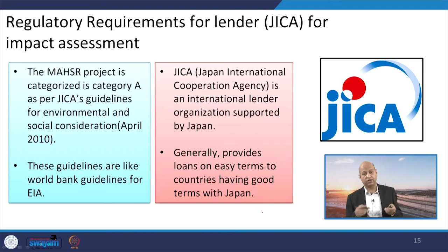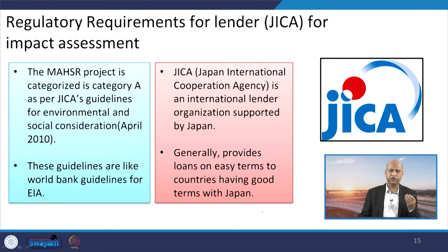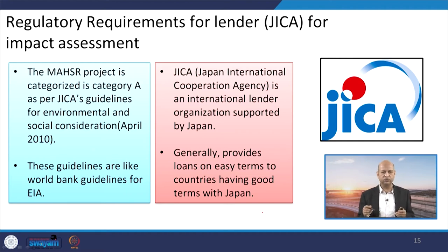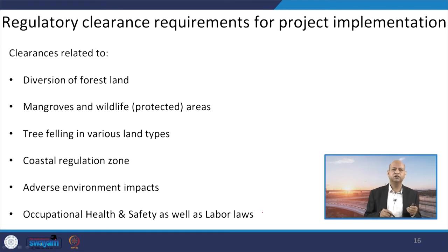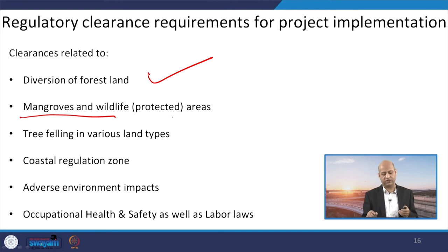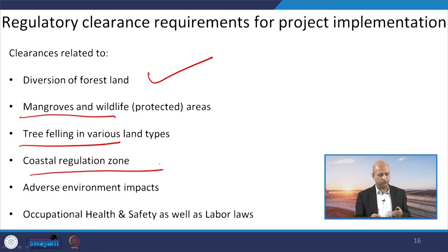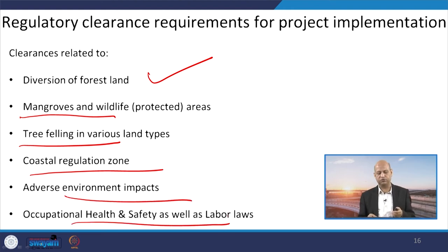Whoever funds the project has their own conditions and terms which the borrower must fulfill. JICA's guidelines also include a very exhaustive, detailed EIA — similar to World Bank requirements — so that one can identify real environmental impacts and how mitigation measures will reduce them. Regulatory clearances required include diversion of forest land, mangroves and wildlife protected areas along the route, tree felling, coastal regulation zones, adverse environmental impacts, and occupational health and safety or labour law issues.